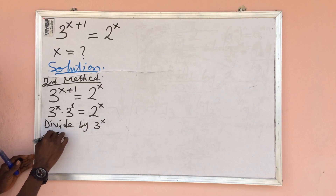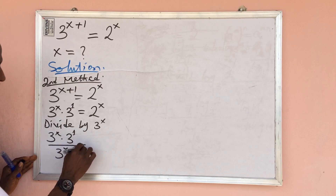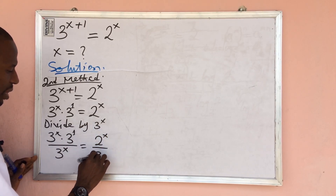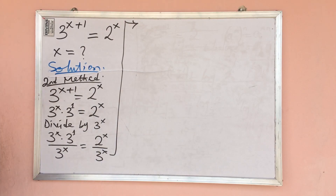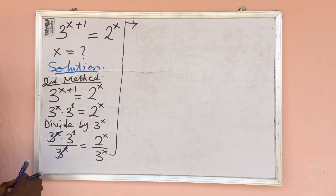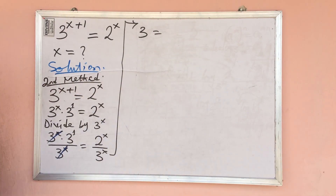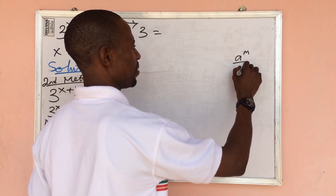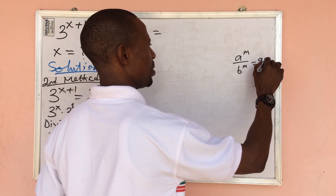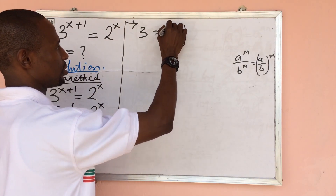Now I want to divide through by three to the power of x. This gives us three to the power of x times three to the power of one, over three to the power of x, equal to two to the power of x over three to the power of x. The three to the power of x cancels on the left, leaving three. Applying the law a^m over b^m equals (a over b)^m, we get three equals two over three, all to the power of x.